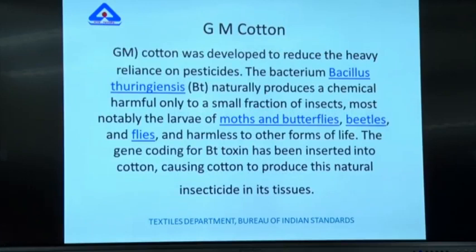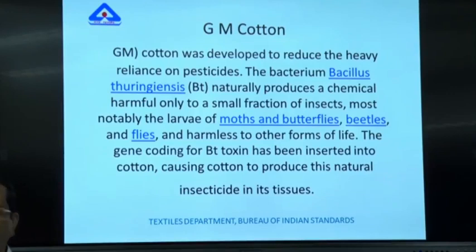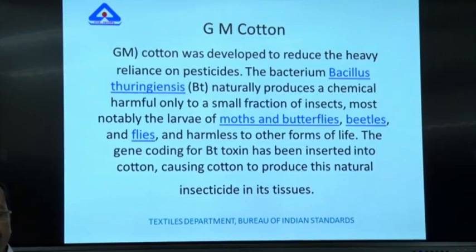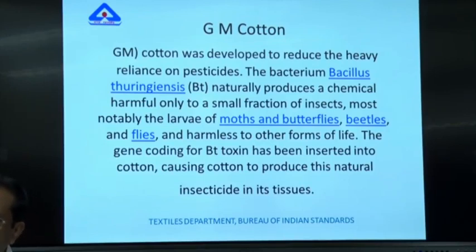BT cotton is a genetically modified cotton. The bacterium naturally produces a chemical harmful only to specific insects like the boll worm — most notably their larvae — and is harmless to other forms of life. The gene coding for BT toxin is inserted into cotton, causing it to produce this natural insecticide in its tissues. With the advent of BT cotton, cotton production has grown many fold in India, since boll worm attacks had previously devastated crops.